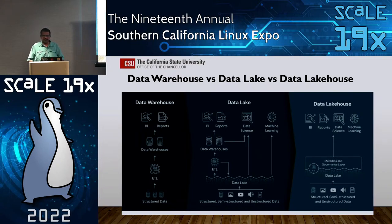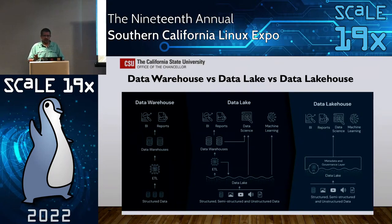Most organizations today have a very lean or non-existent data governance framework, partly because there's no toolset that supports these kinds of tools. Even most clouds today support only a data catalog — that's about as much as you'd see. Third-party tools like Informatica are super expensive, and Collibra is another company working toward building an enterprise data governance toolset, but it's still bits and pieces. No one does everything.